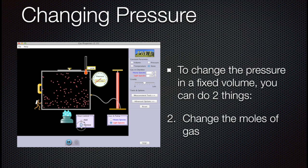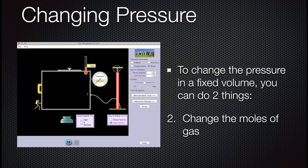You can also change the pressure by changing the moles of molecules. Here we're going to reset the simulation and put only a couple moles of molecules into the container. Notice that they don't hit the walls very frequently at all, and the pressure is very low.